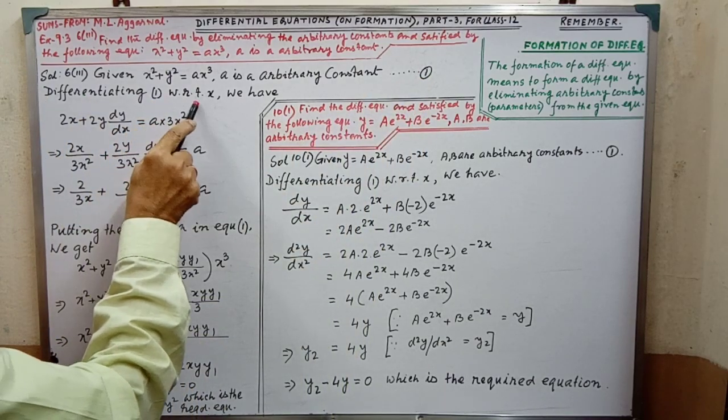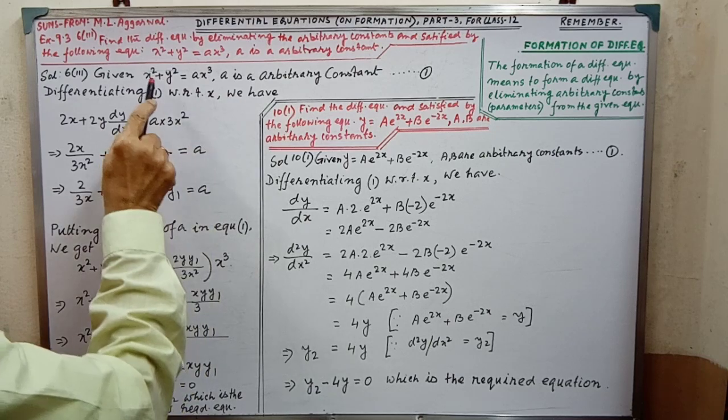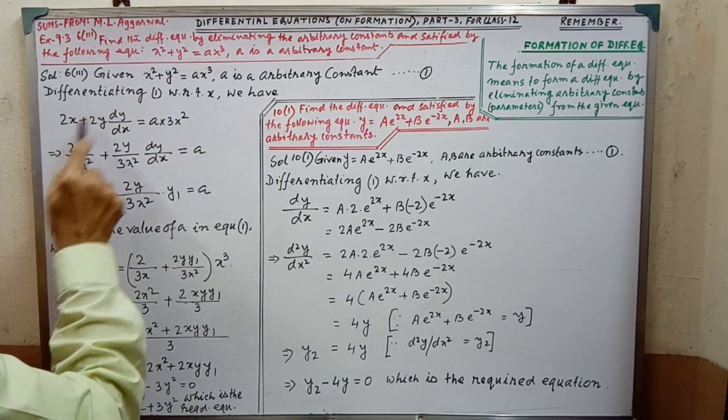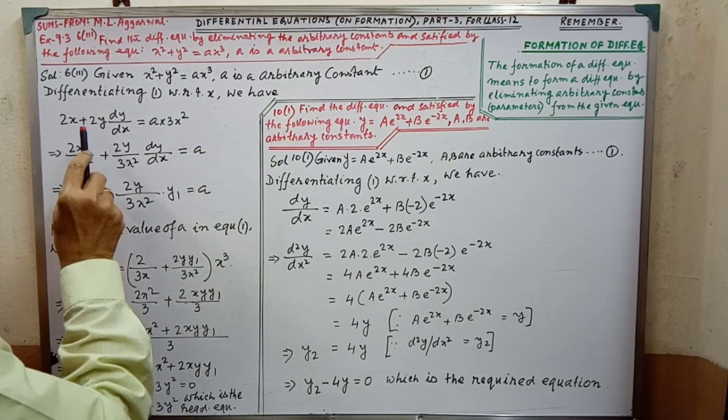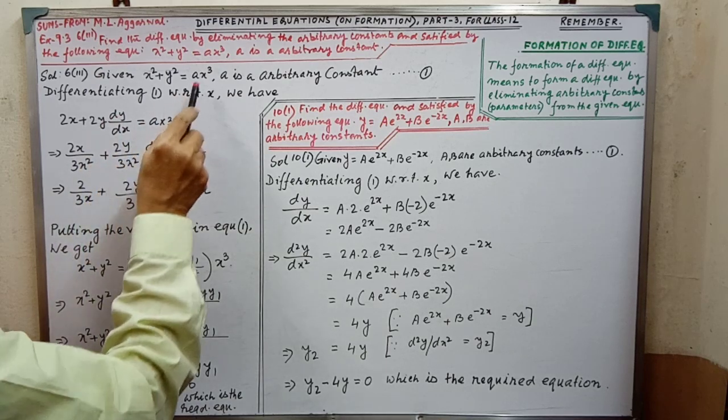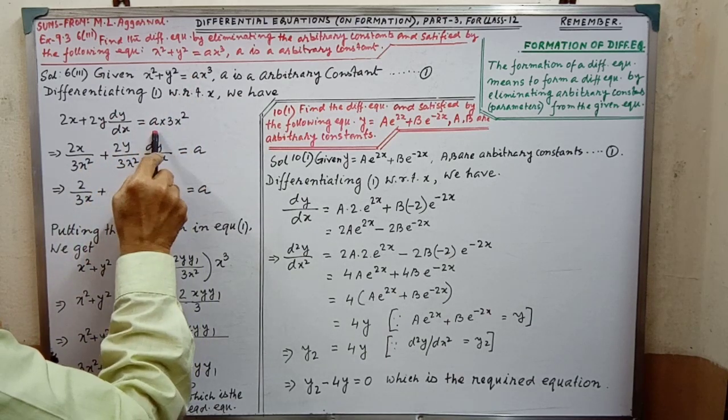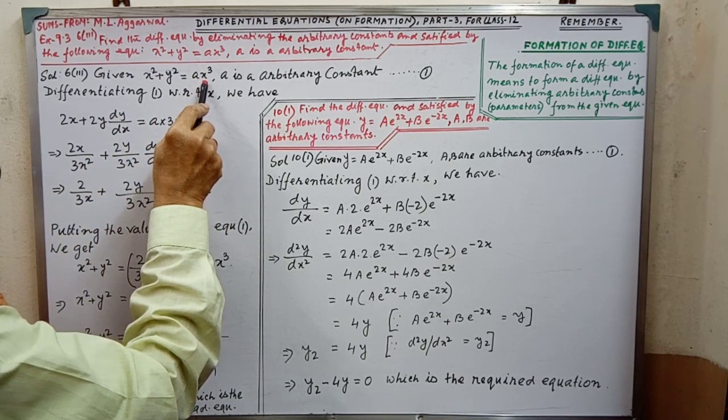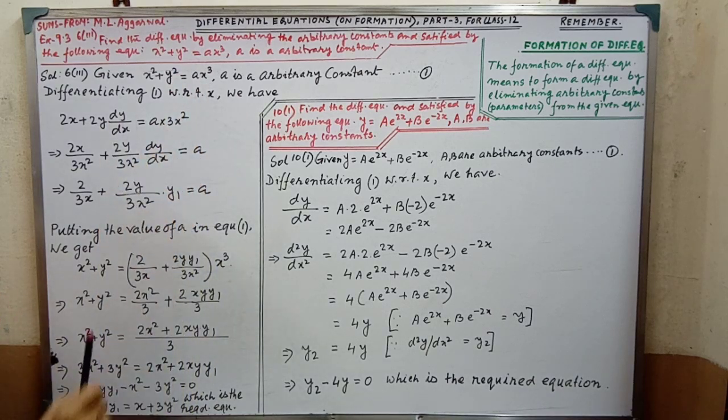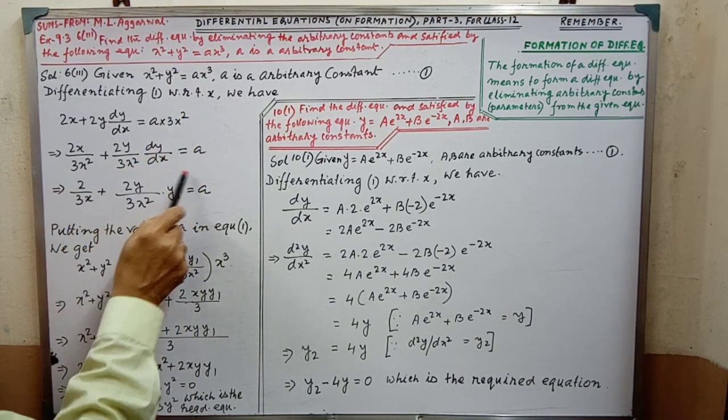Differentiating 1 with respect to x, we have that is x squared 2x and y squared, that is 2y dy by dx, and a constant differentiation of x cubed, that is 3x squared. After that, we have to simplify.